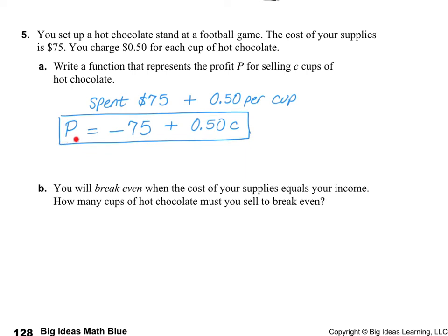So let's see if we can understand this again. The profit is going to equal how much money we're going to make. We have to first make up this amount — the $75 — and then we're going to start selling hot chocolate at $0.50 per cup. It says you're going to break even when the cost of your supplies equals your income. So when we make up this amount from selling our hot chocolate, we're going to be at the break-even point. The question is how many cups do you need to sell in order to break even? We have $75 that we've spent and we need to figure out how many cups we've got to sell.